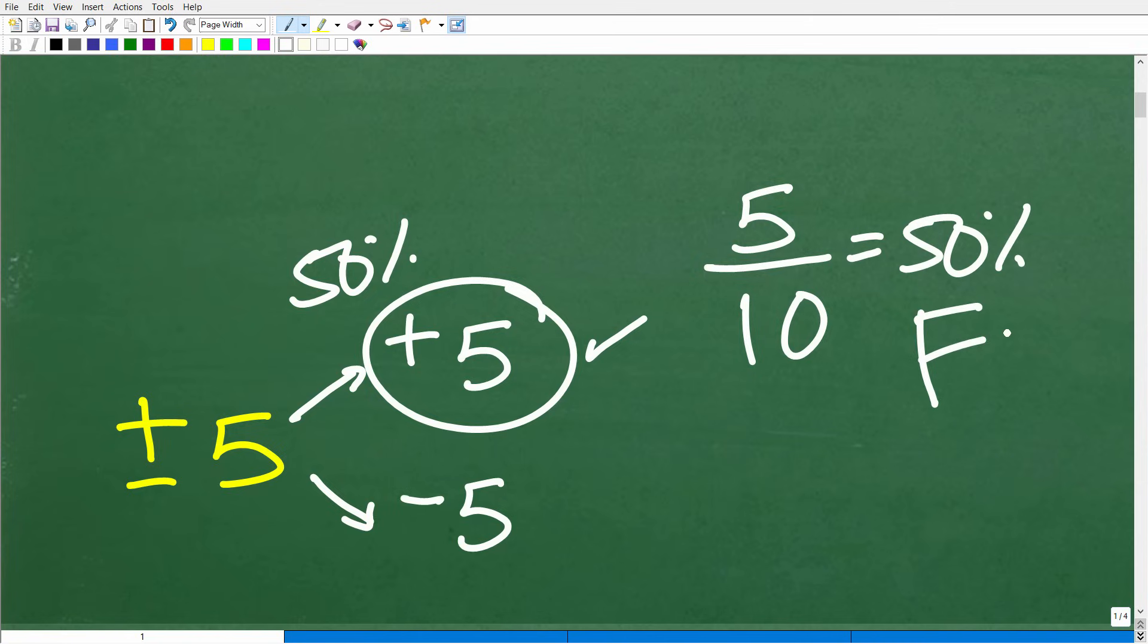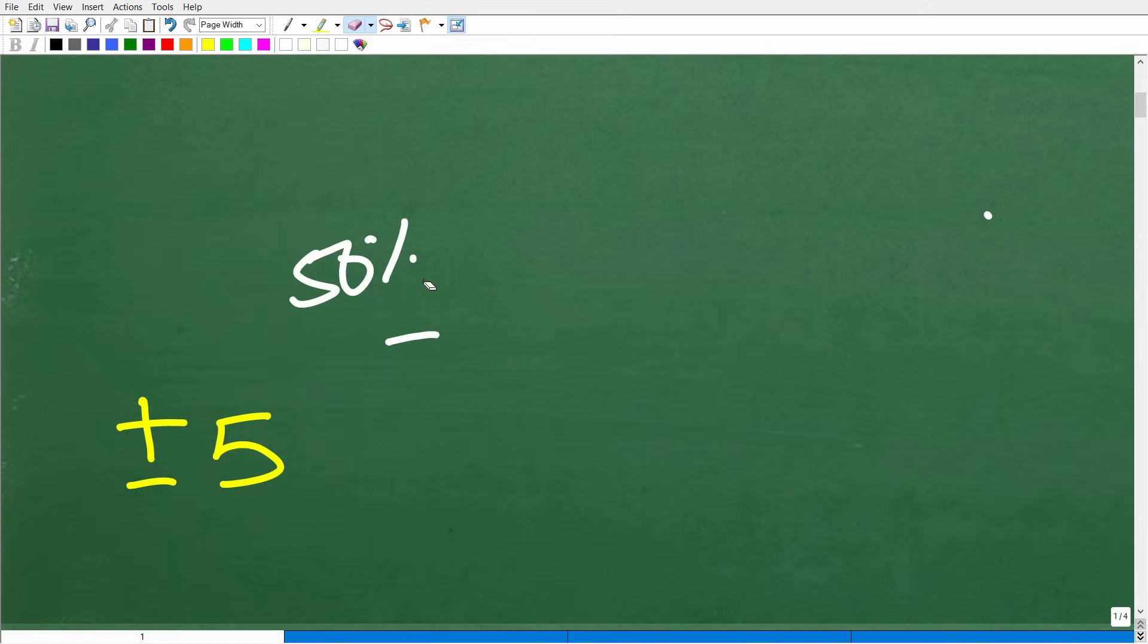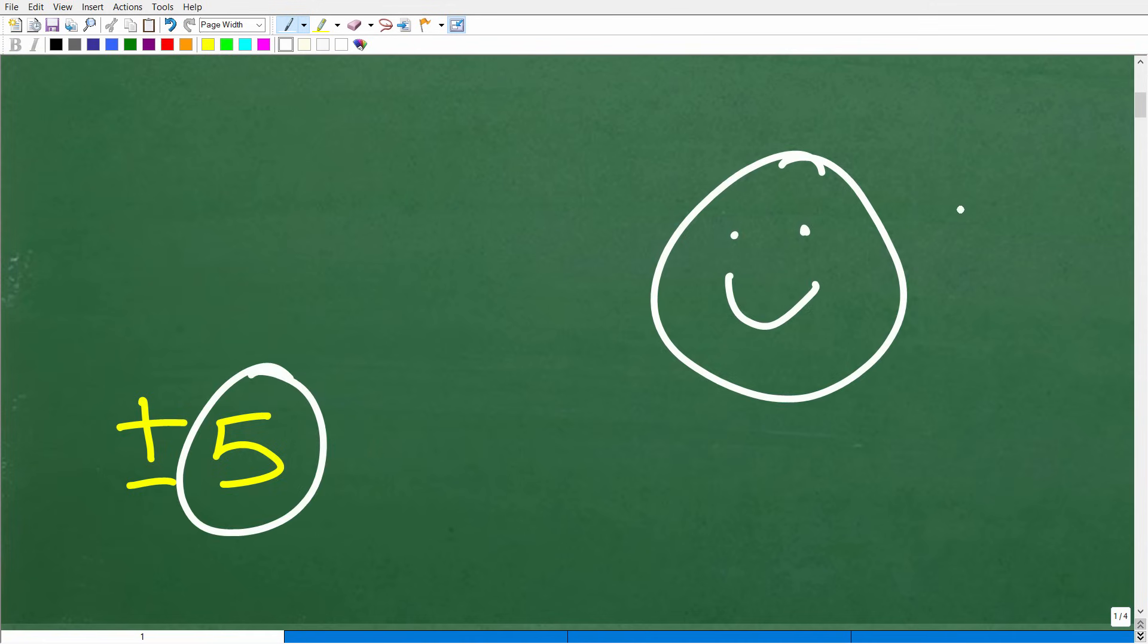You might be saying to yourself, come on, Mr. YouTube Math Man, you're overdoing it. I got 5, I was pretty right. Well, you were half right, okay? You were definitely half right. Because I'm such a generous person, if you got 5, I'll give you a little happy face and I'll give you a B.